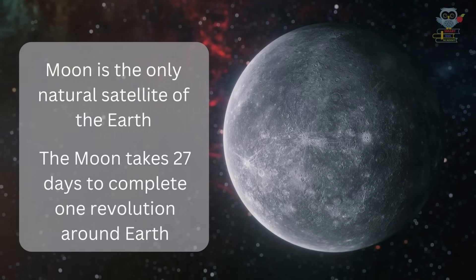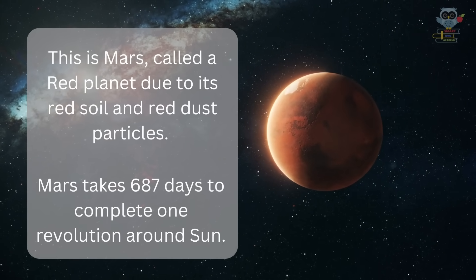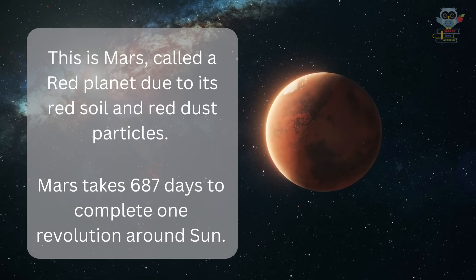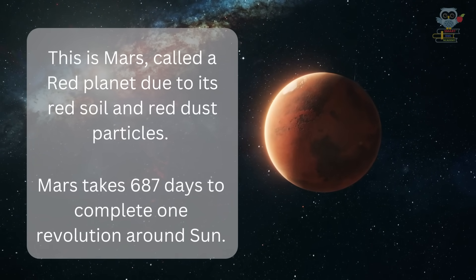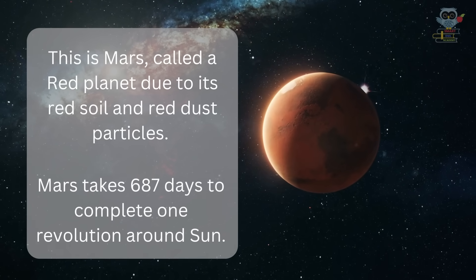This is Mars, called a red planet due to its red soil and red dust particles. Mars takes 687 days to complete one revolution around the Sun.